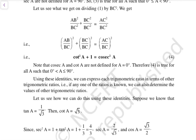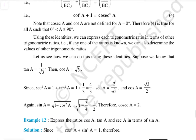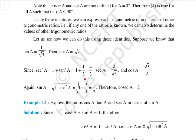Using these identities, we can express each trigonometric ratio in terms of other ratios. That is, if any one ratio is known, we can also determine the values of other trigonometric ratios. Suppose we know that tan A = 1/√3 and cot A = √3. Then sec²A = 1 + tan²A = 1 + 1/3. So sec A = 2/√3 and cosec A = √3/2. Again, sin A = √(1 − cos²A) = √(1 − 3/4) = 1/2. Therefore cosec A = 2.